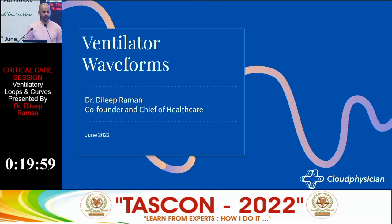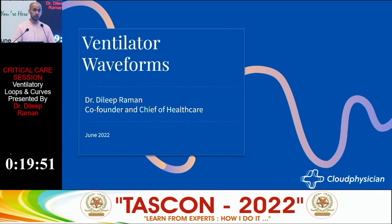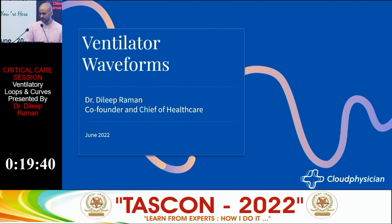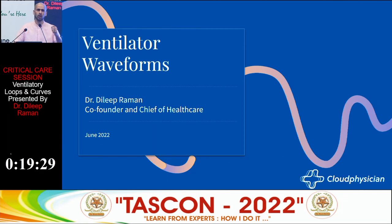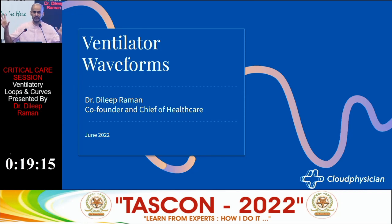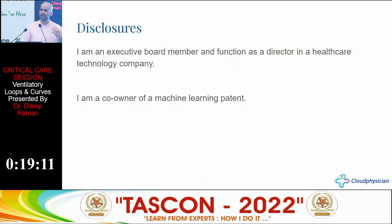Good morning everyone. Thanks to the organizing committee of TASCON for inviting me and allowing me to share some of my learnings. The topic given to me is ventilator waveforms and loops, and the time given is about 20 minutes. One key message I wanted to share is that a common question I get is: can you suggest one book or one source for reading ventilator waveforms or analyzing ventilator loops? A few years ago it was very difficult to give one book because the information is scattered, and the way people think about ventilators is always related to what they were used to in training.